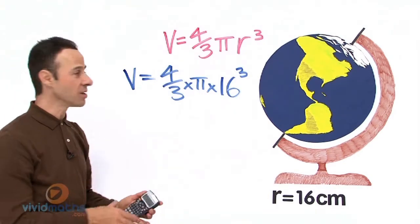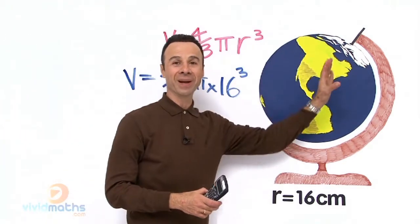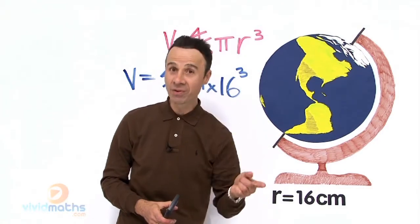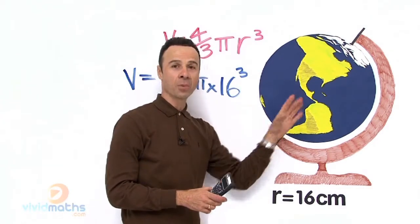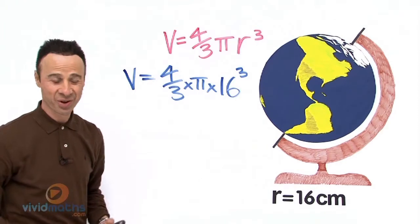And our answer for the total volume in cubic centimeters, to the nearest cubic centimeter, of this model globe planet Earth is...